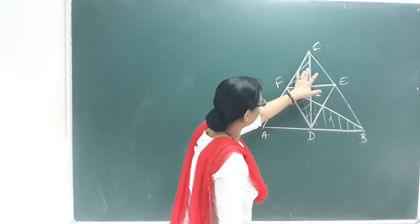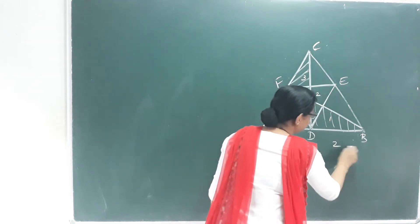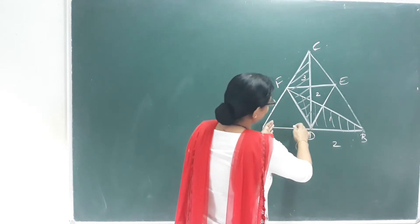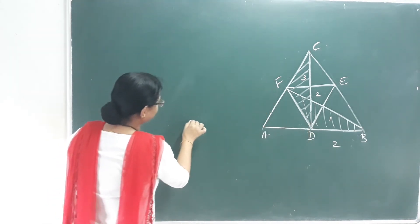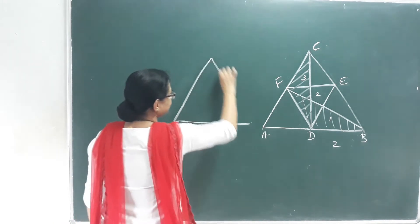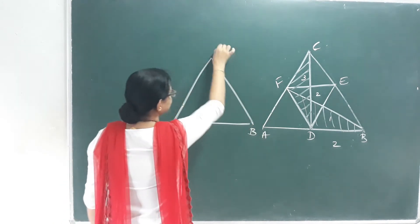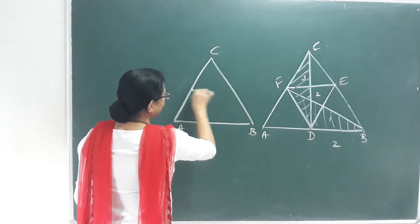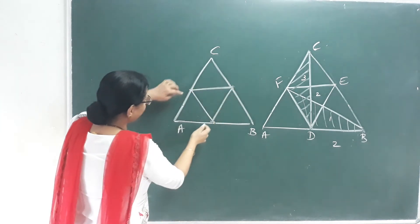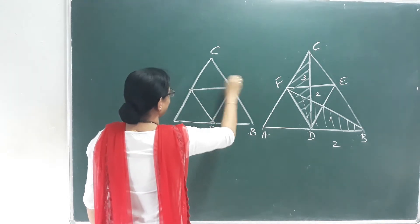This triangle is equal to this triangle — two triangles. That's why I look at this figure again. This is A, B, C. Join the points. You can use the parallel lines D, E, F. Look at point D — join the points here.